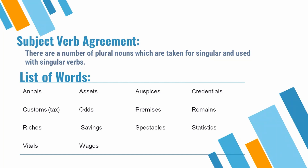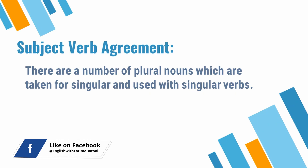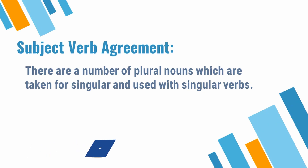Parts of body like entrails, intestines; games like cards, billiards, dominoes. Toh hamare paas do tarah ke lafz aaye: woh lafz jinki plural form thi lekin woh singular ke taur par treat ho rahe the, aur woh lafz jinki plural form hai aur woh plural ke taur par hi use honge — chahe woh kisi ek cheez ko refer kar rahe hon. Jaise kainchi (scissors) ek aala hai, lekin iski spelling plural hai aur ismein do inseparable parts hain, isliye ise plural ke taur par treat kiya jata hai. Annals, assets, auspices, credentials, customs, odds, premises, remains, riches, savings, spectacles, vitals — yeh alfaz plural ke taur par use honge.